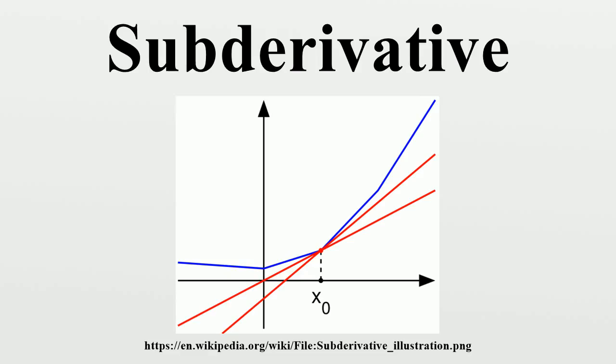A functional v* in the dual space V* is called a sub-gradient at x₀ in U if... The set of all sub-gradients at x₀ is called the sub-differential at x₀ and is again denoted ∂F. The sub-differential is always a convex closed set.